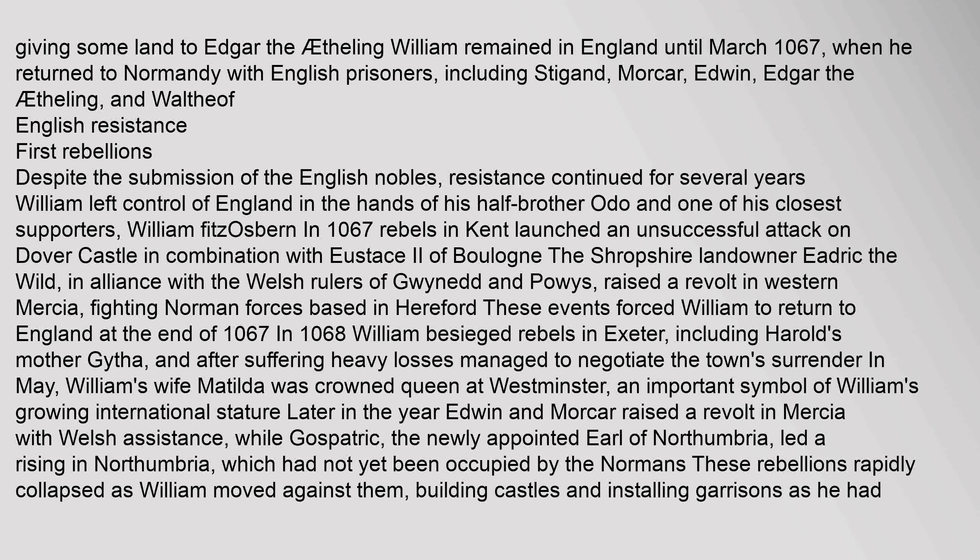Despite the submission of the English nobles, resistance continued for several years. William left control of England in the hands of his half-brother Odo and one of his closest supporters, William Fitzosborne. In 1067, rebels in Kent launched an unsuccessful attack on Dover Castle in combination with Eustace II of Boulogne. The Shropshire landowner Edric the Wilde, in alliance with the Welsh rulers of Gwynedd and Powys, raised a revolt in western Mercia, fighting Norman forces based in Hereford. These events forced William to return to England at the end of 1067. In 1068, William besieged rebels in Exeter, including Harold's mother Jytha.